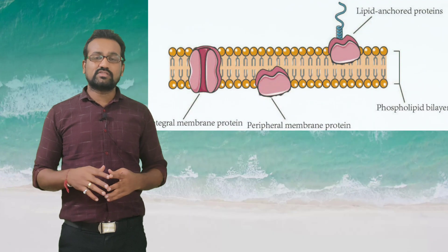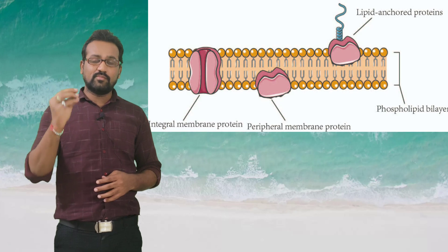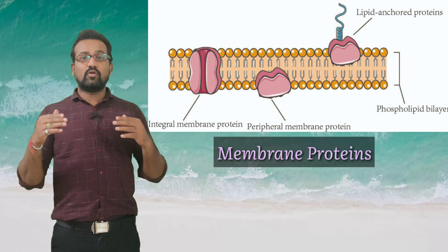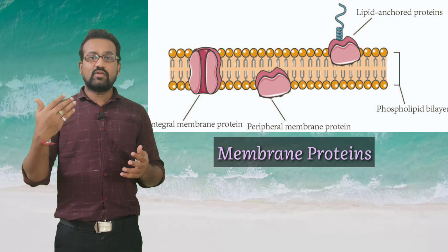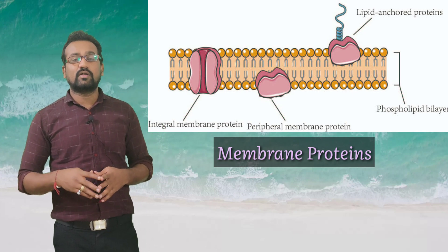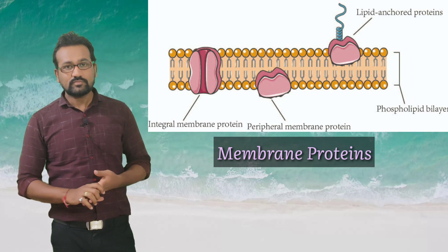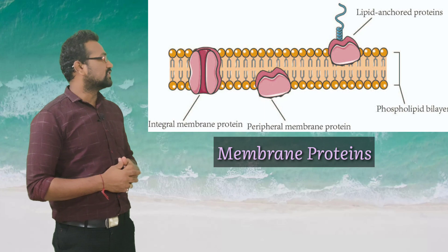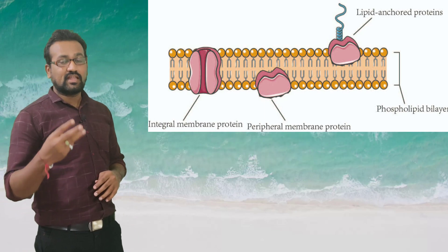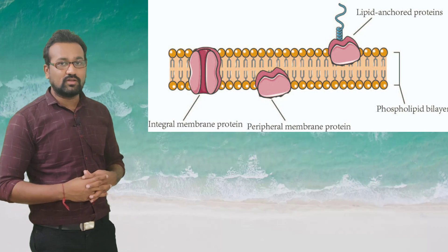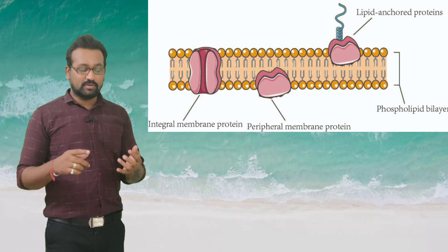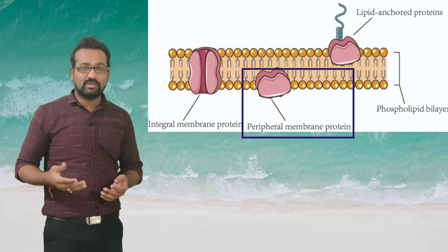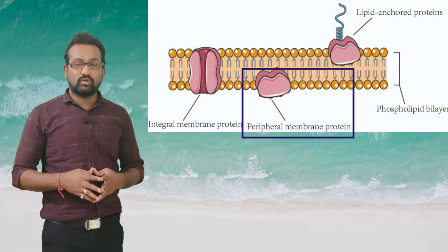Now we are going to discuss the third member, which is a very important member — the protein. Proteins are present in the membrane and perform diverse functions required for various activities of the cell. When we look at the proteins in the membrane as shown on the screen, these proteins are of various types. There are three major types: the first are proteins present on the surface outside and inside of the membrane, known as peripheral proteins.